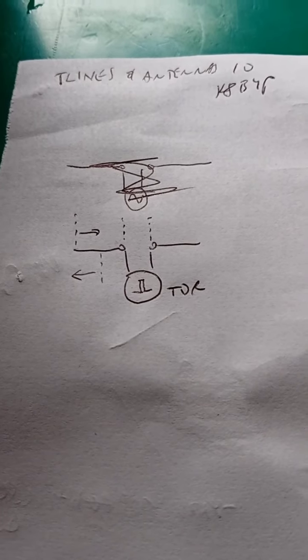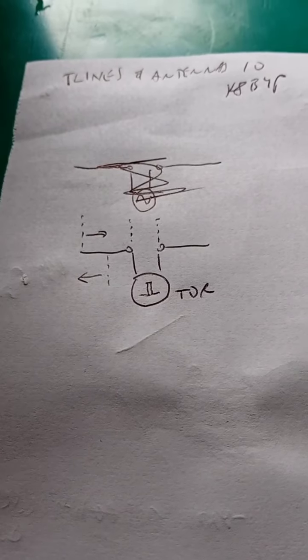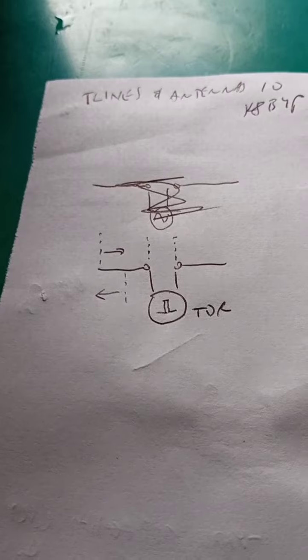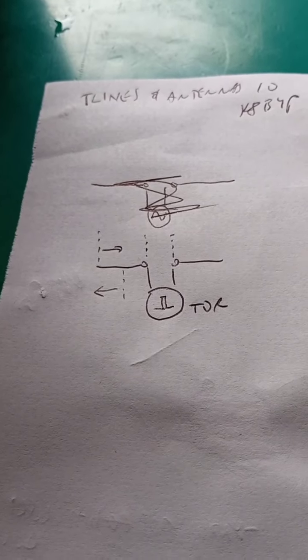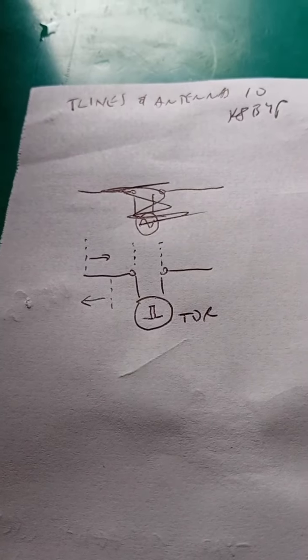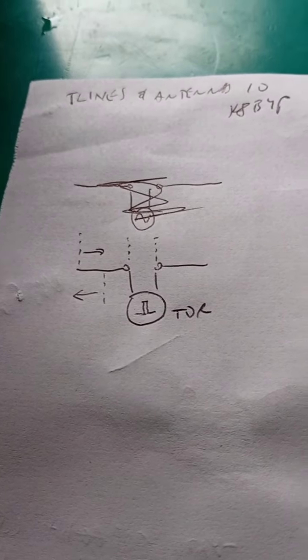Finally getting around to part 10 of Transmission Lines and Antennas to show how modern science, quantum and nuclear, says that antenna so-called radiation, which is not radiation, it's emission, is caused by, in their term, charge acceleration.